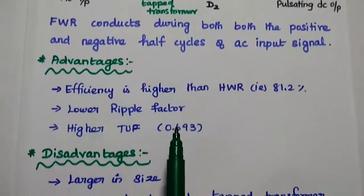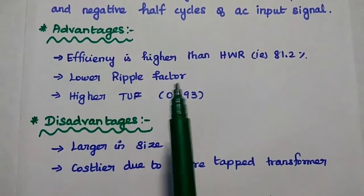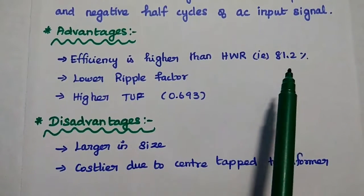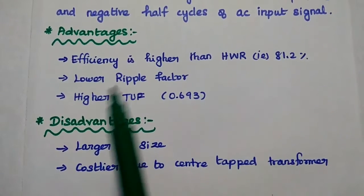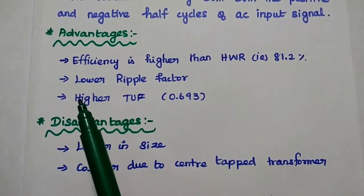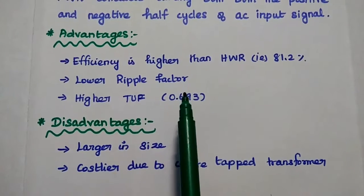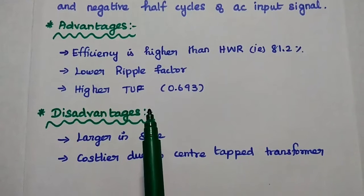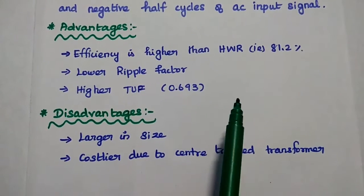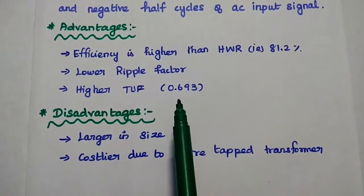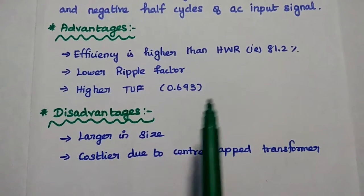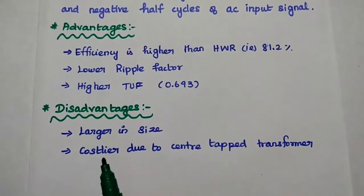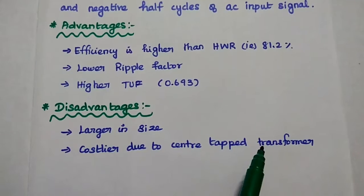The advantages of the full wave rectifier: its efficiency is higher than the half wave rectifier — the maximum efficiency is 81.2%. It reduces the ripple factor, whose value is much less compared to the half wave rectifier. The transformer utilization factor is higher than the half wave rectifier, at around 69.3%. However, it has a disadvantage: its size is larger and costlier due to the center tap transformer.